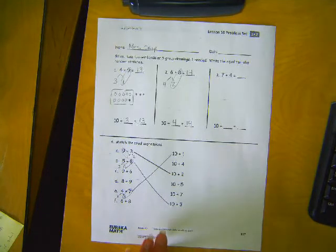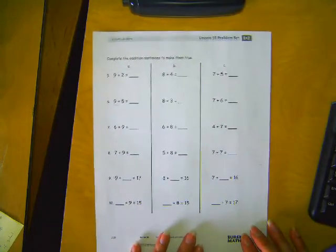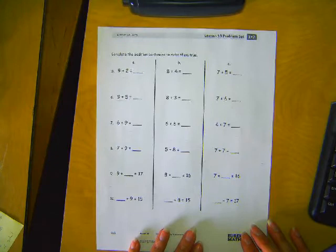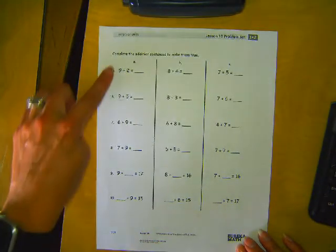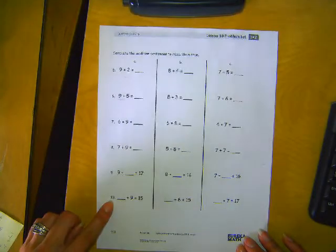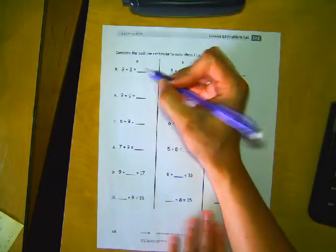If you're not done yet, that's okay. You can pause it and keep working, or you can come back to finish. Let's do 5 and 10 together on this side. So 5a, we have 9 plus 2 equals blank.